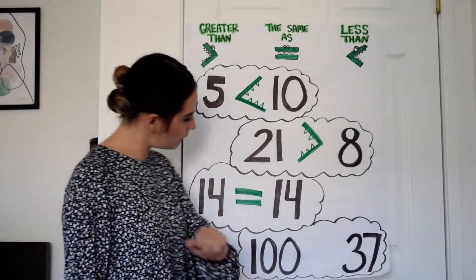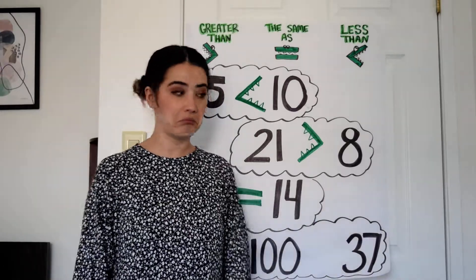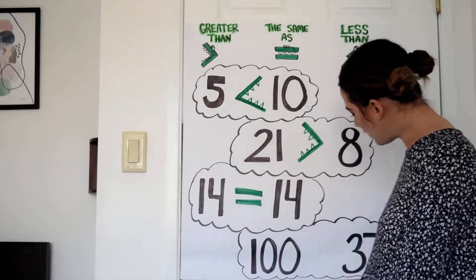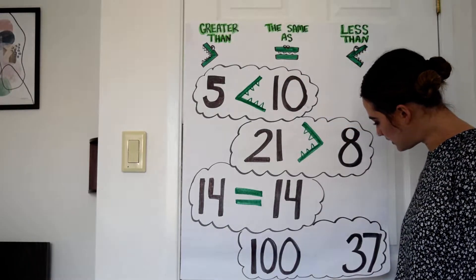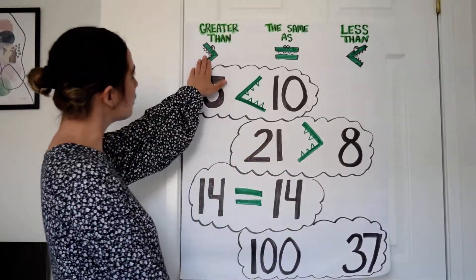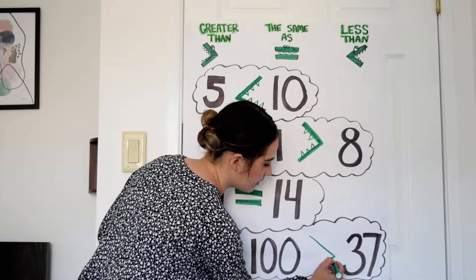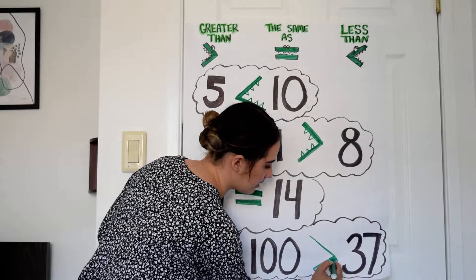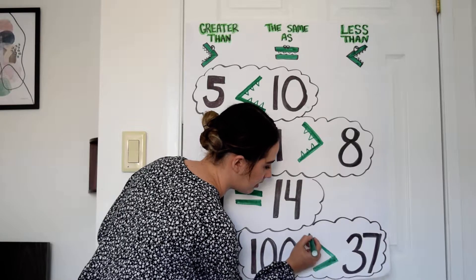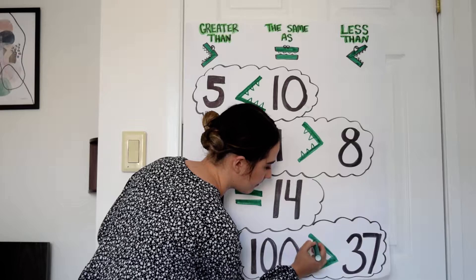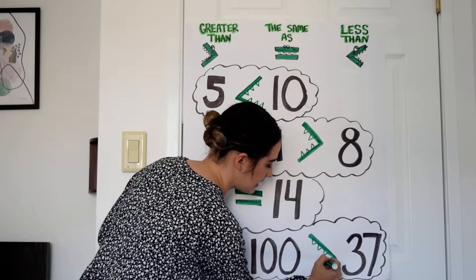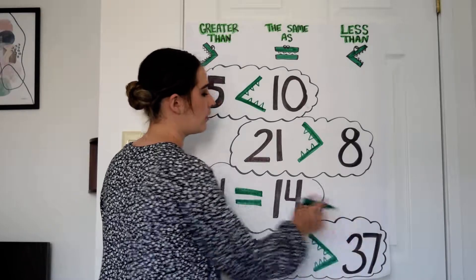Let's try the last one: I have one hundred and I have thirty-seven. Which one's the greater number? I think one hundred is the greater number, so I'm going to get my greater than symbol. Remember, the mouth should be facing the bigger number because this alligator is hungry and greedy — he wants to eat the bigger number. So this now says one hundred is greater than thirty-seven.